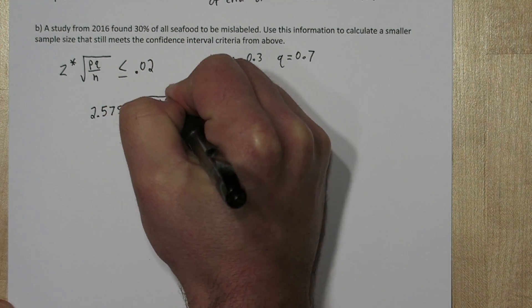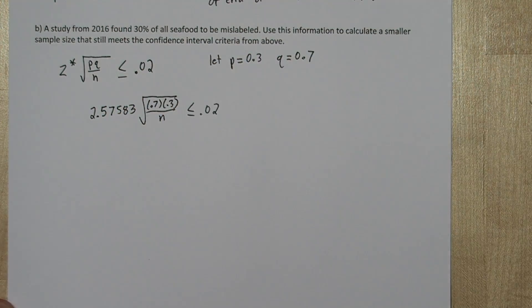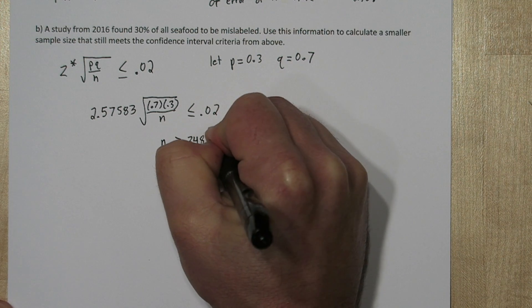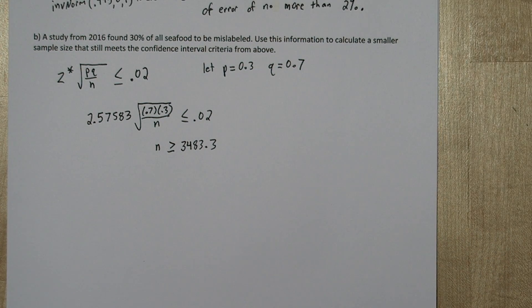So when we solve this, we get n needs to be greater than or equal to 3483.3. We'll round that up, and we have our answer.